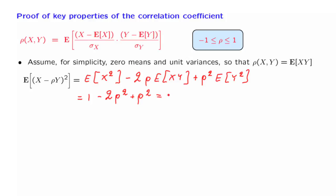which is 1 minus ρ squared. Now, notice that this is the expectation of a non-negative random variable. So this quantity here must be non-negative. Therefore, 1 minus ρ squared is non-negative, which means that ρ squared is less than or equal to 1. And that's the same as requiring that ρ lie between minus 1 and plus 1.